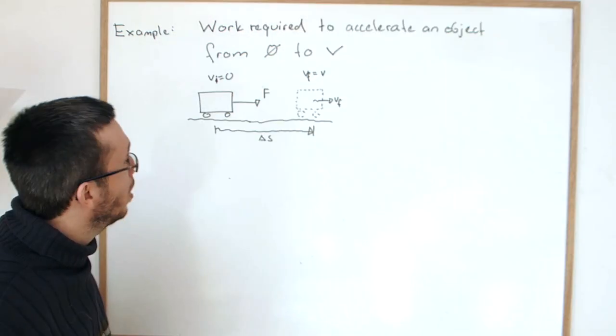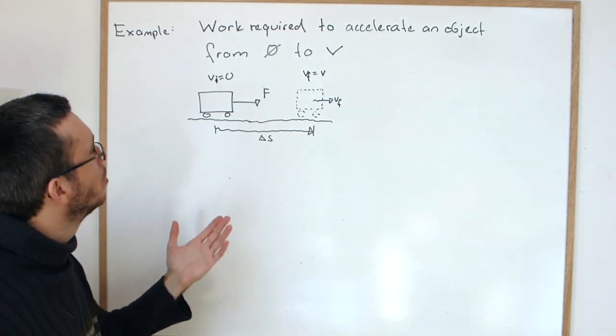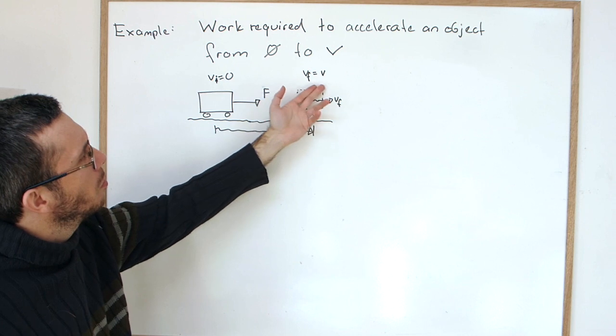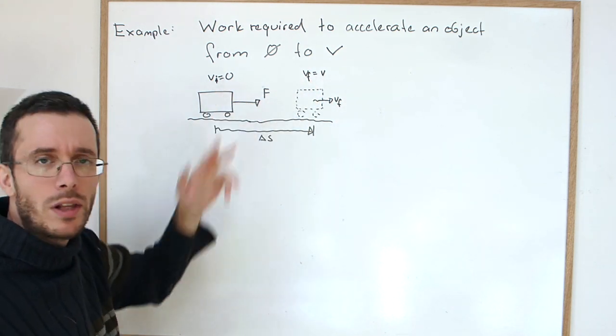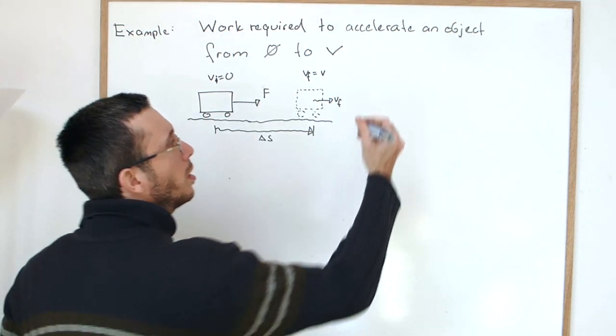So let's start by writing down what we know. We know there is a link between the final velocity and the initial velocity from kinematics.